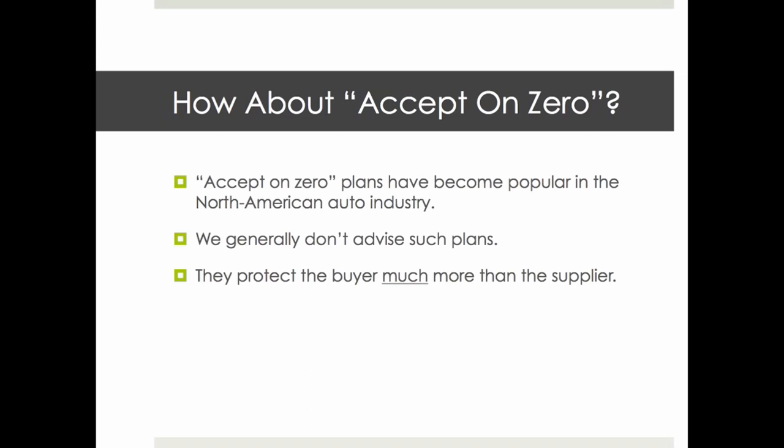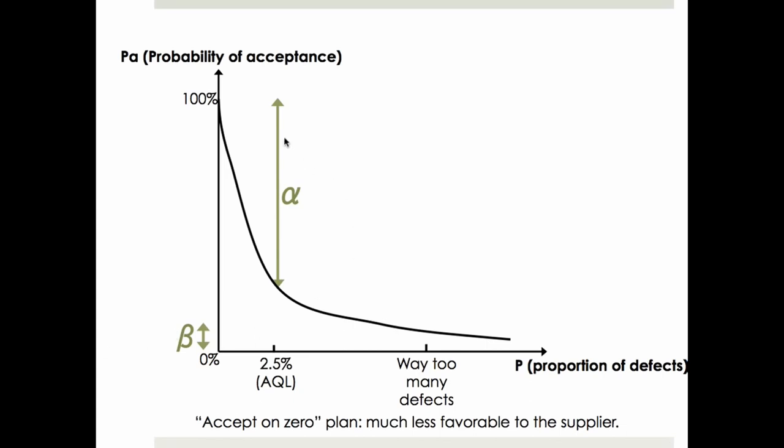Some buyers attempt to get tougher with an accept-on-zero standard, meaning that if you find just one defect, that's enough to reject. It's getting some traction — already popular in the car industry in North America. However, we don't really advise going for this kind of standard. It's very imbalanced in the buyer's favor: the alpha risk (supplier's risk) is huge, while the buyer's risk is very small. This makes it pretty hard to find a supplier, for example in China, that would accept these terms.